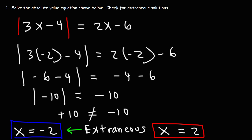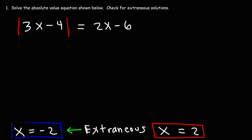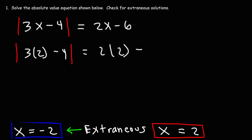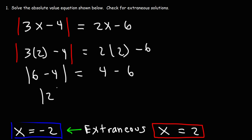Let's also check x equals 2: the absolute value of 3 times 2 minus 4 equals 2 times 2 minus 6. That gives the absolute value of 2 equals negative 2. Since the absolute value of 2 is positive 2, and 2 does not equal negative 2, x equals 2 is also an extraneous solution. So both solutions in this example turned out to be extraneous.